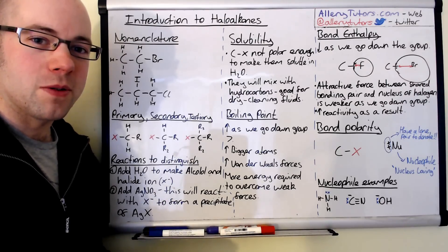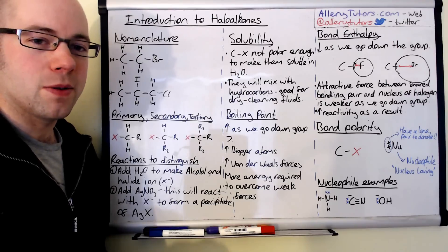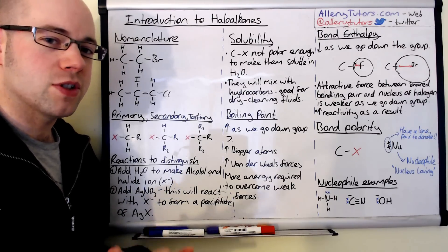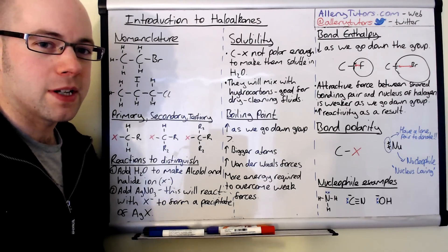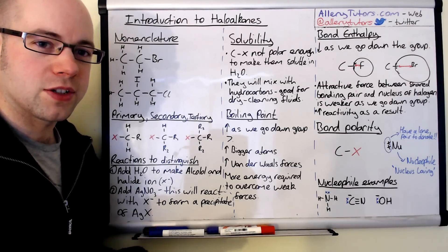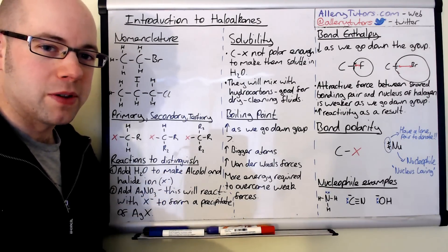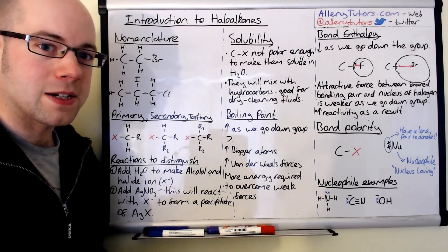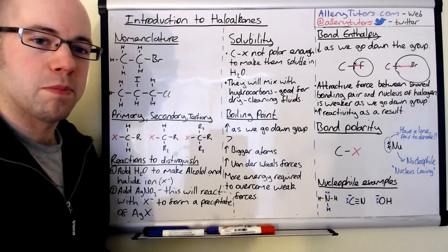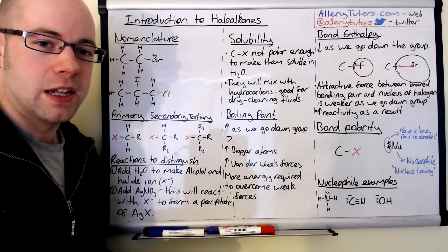In this video we're going to look at nomenclature, in other words how we can name haloalkanes. We're going to look at what we mean by primary, secondary and tertiary haloalkane and how we can distinguish between the three of them. We're also going to look at solubility, boiling points, the bond density between the carbon and the halogen atom, and bond polarity as well, leading on to some reactions.